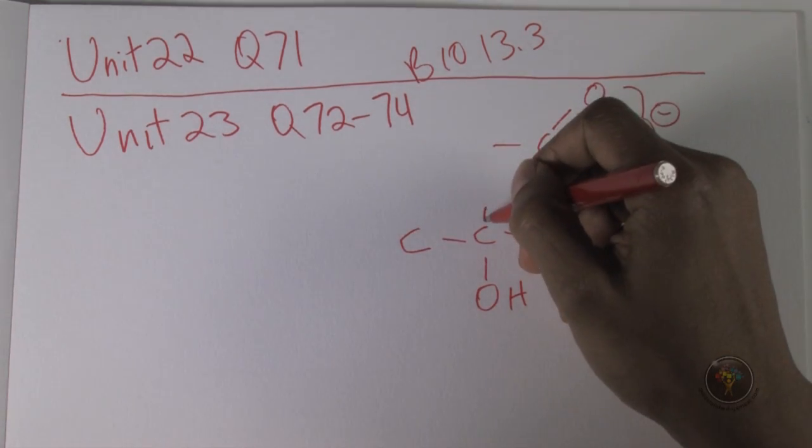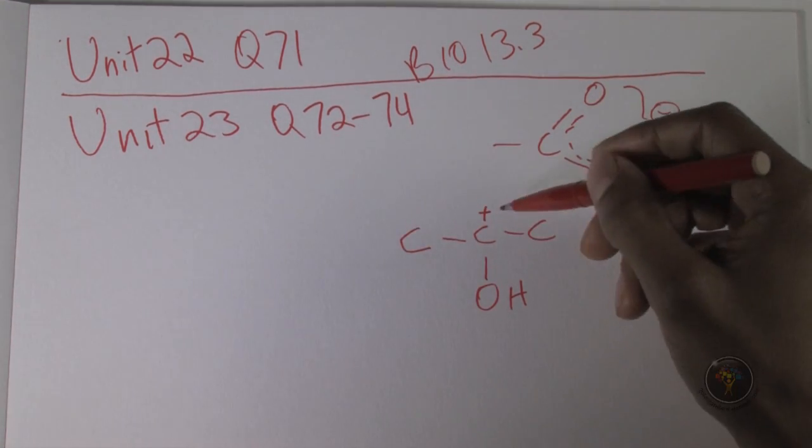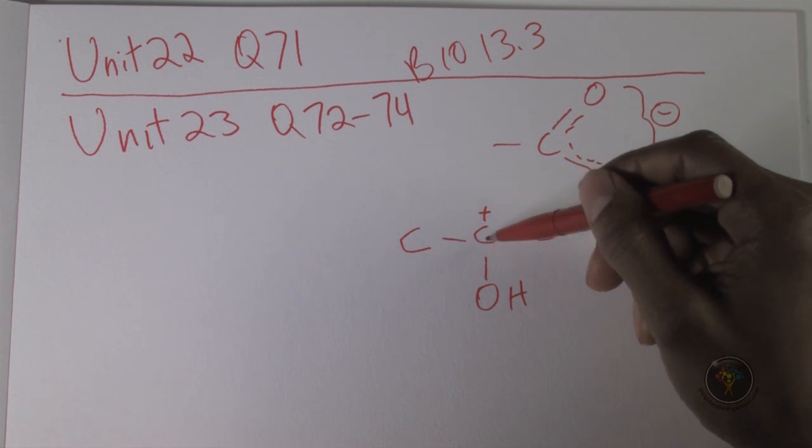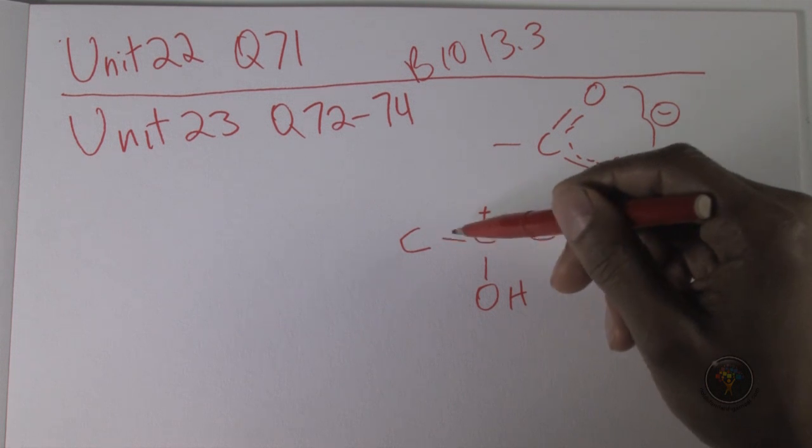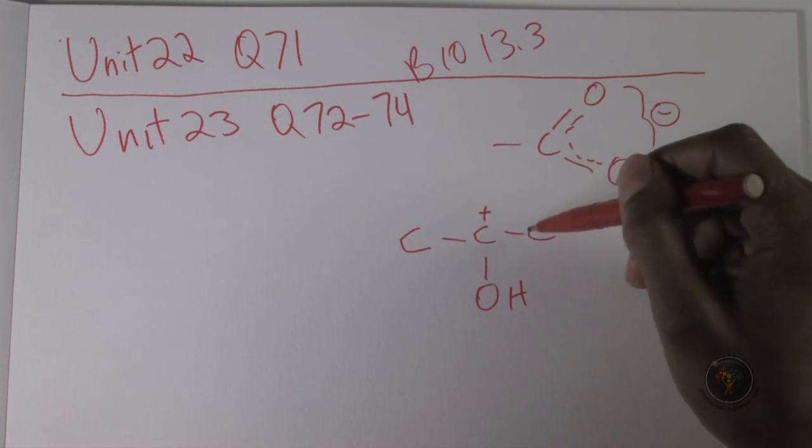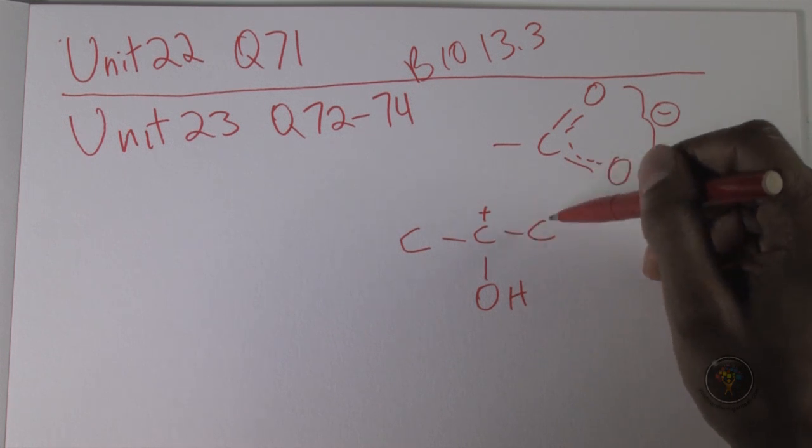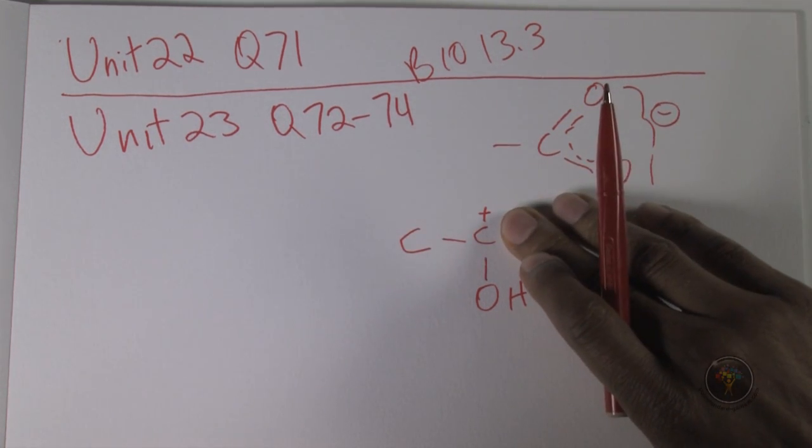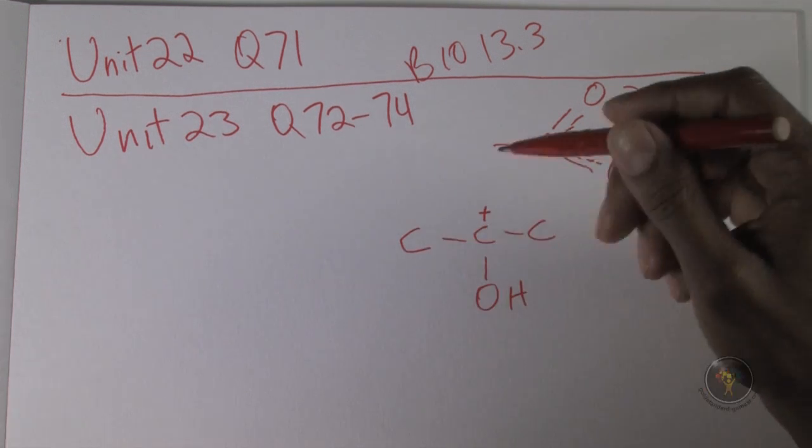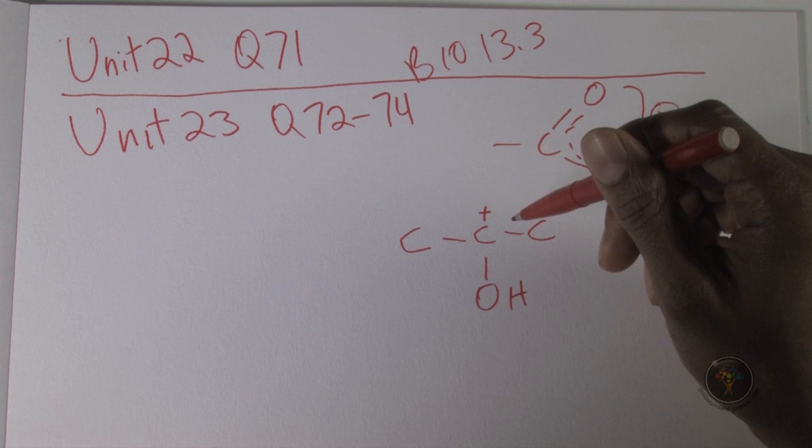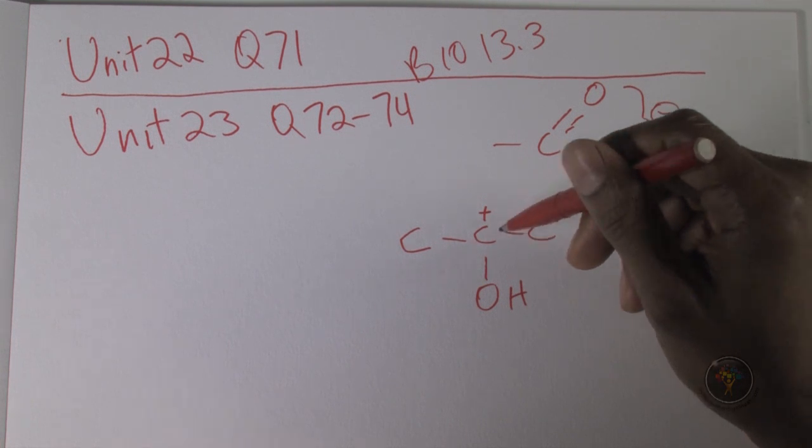This is, by the way, called a secondary carbocation. It's a positively charged carbon, and there are two other carbons attached to it. Two carbons makes it secondary. If it had three carbons attached, tertiary. If there was only one carbon attached to it, it's a primary carbon. So it's a secondary carbocation or also called a carbonium ion.